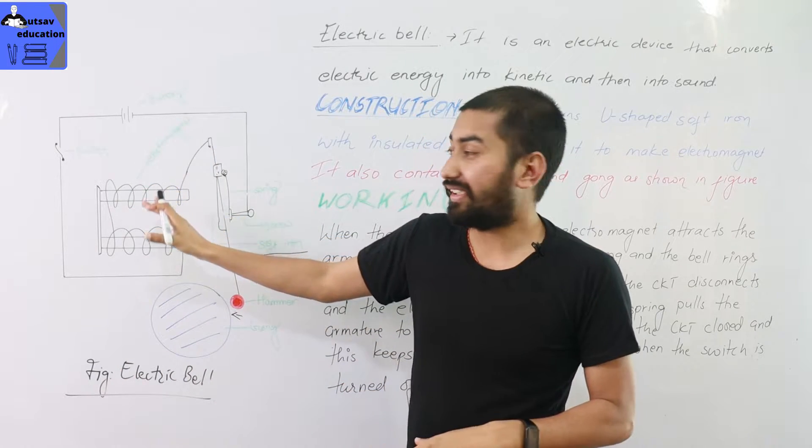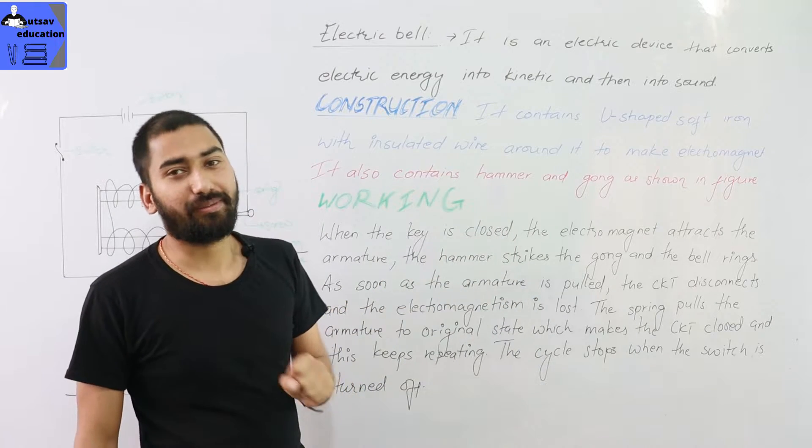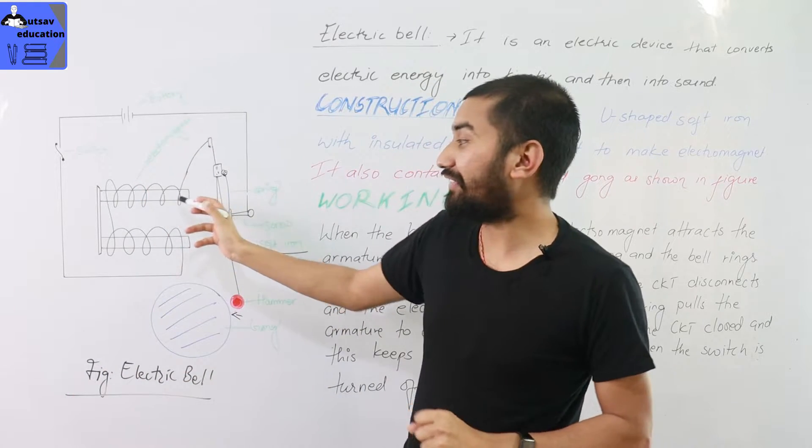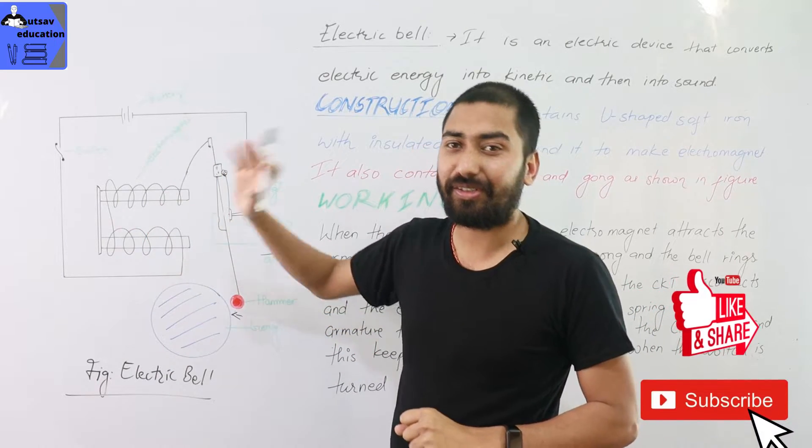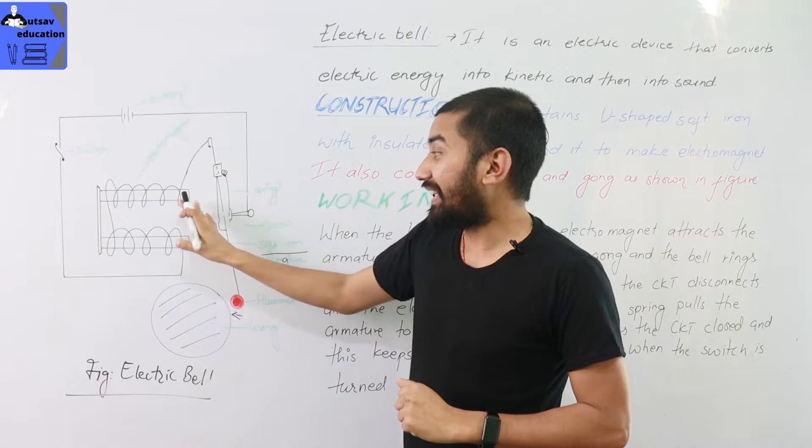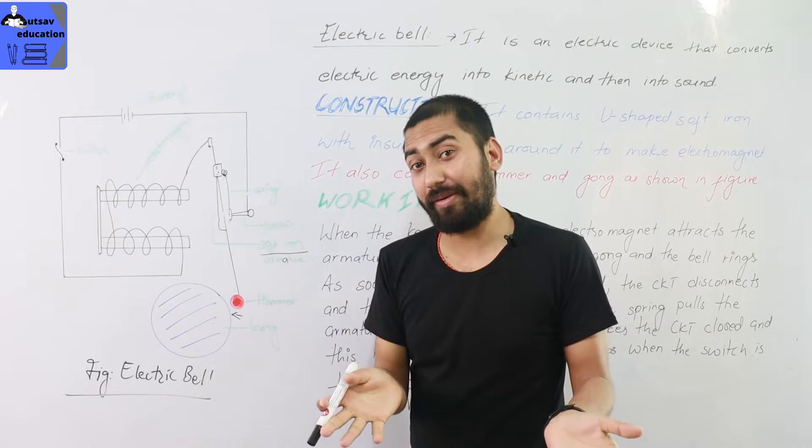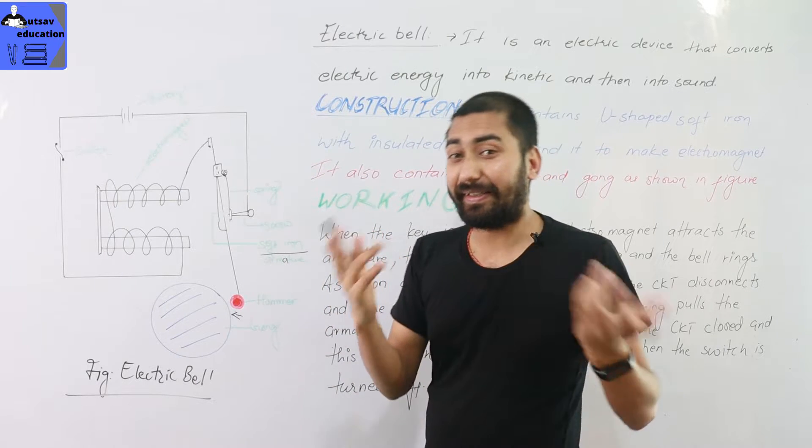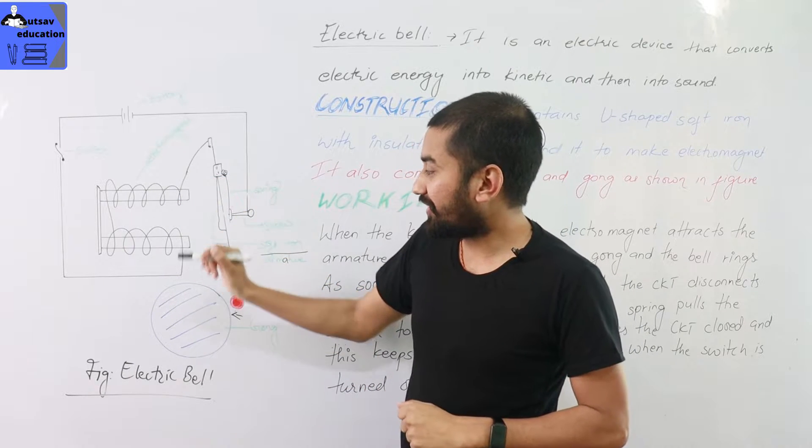If you know the construction, you will be able to explain the working of electromagnet. We used this U-shaped electromagnet. Now, I will explain the working of electromagnet. This is an action figure. Now, how does an electric bell work? How does it start?